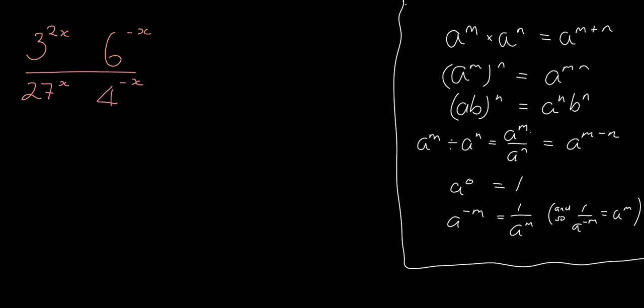So what we need to do is work to get everything in the same base. And you should notice stuff like you should notice that 27 is just a power of 3 and 4 is just a power of 2 and 6 is made up of 2 times 3. So that's what we're going to go ahead and do in order to simplify.